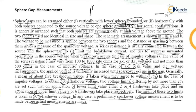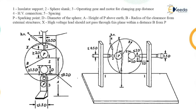In any case, a preliminary spark voltage measurement is to be made before actual measurements are made. The diagrams show figure A as the vertical arrangement and figure B as the horizontal arrangement.